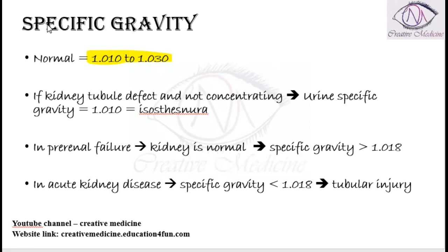In specific gravity, if there is some defect in the kidney tubule, and as a result the kidney is not able to reabsorb water — that means the concentration property of the kidney tubule is defective — in such a case, the urine specific gravity will be 1.010. That is, the specific gravity of urine will almost be equal to that of the serum or plasma, and this is called isosthenuria.